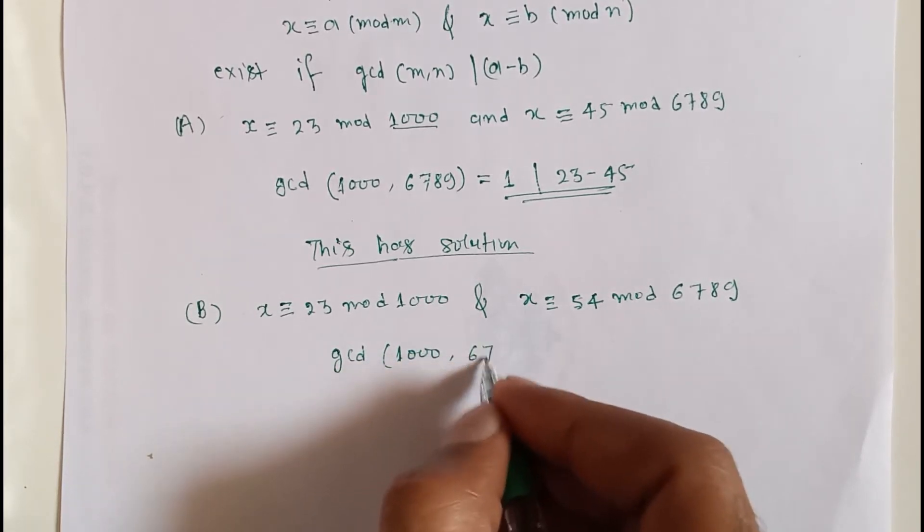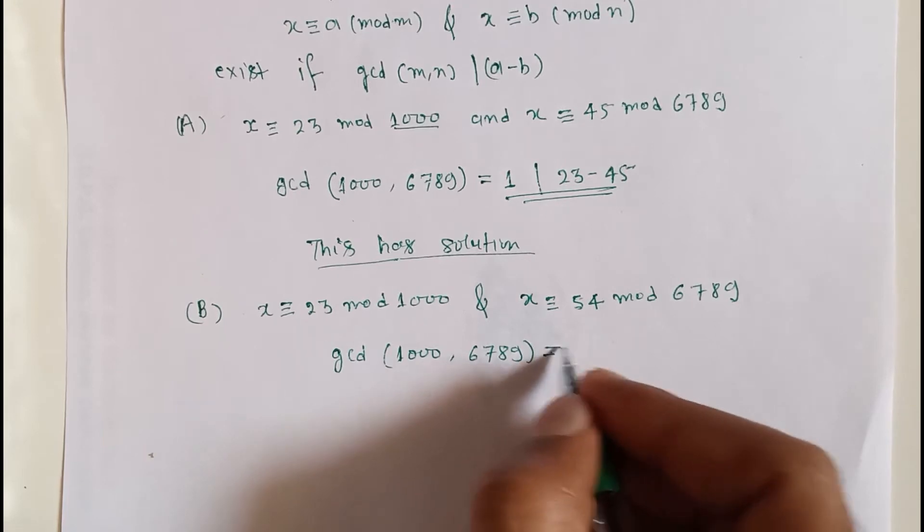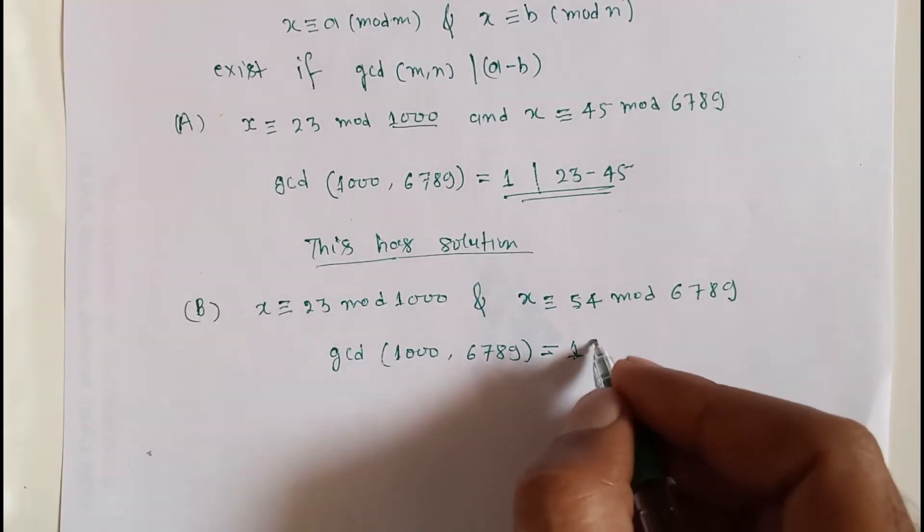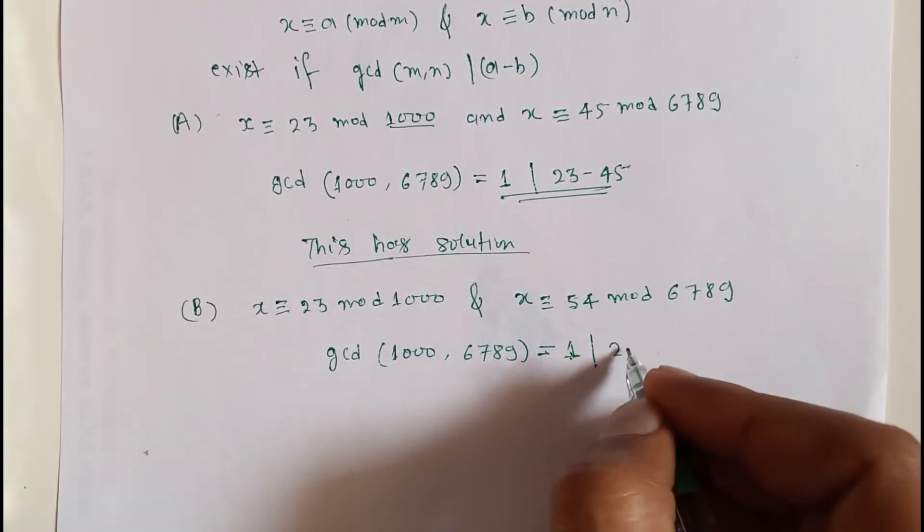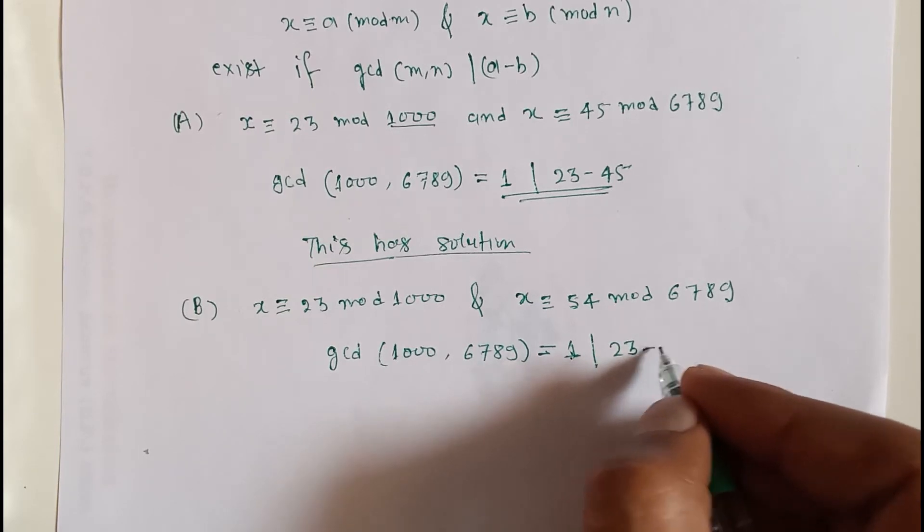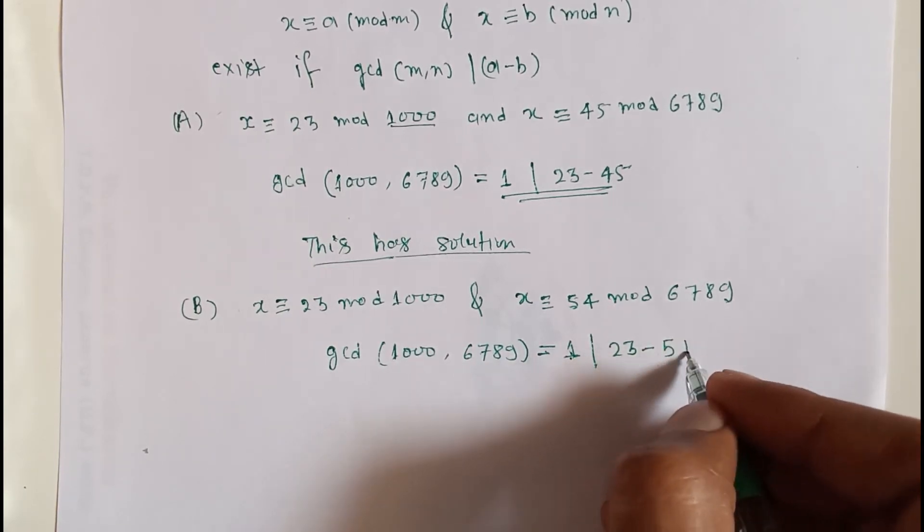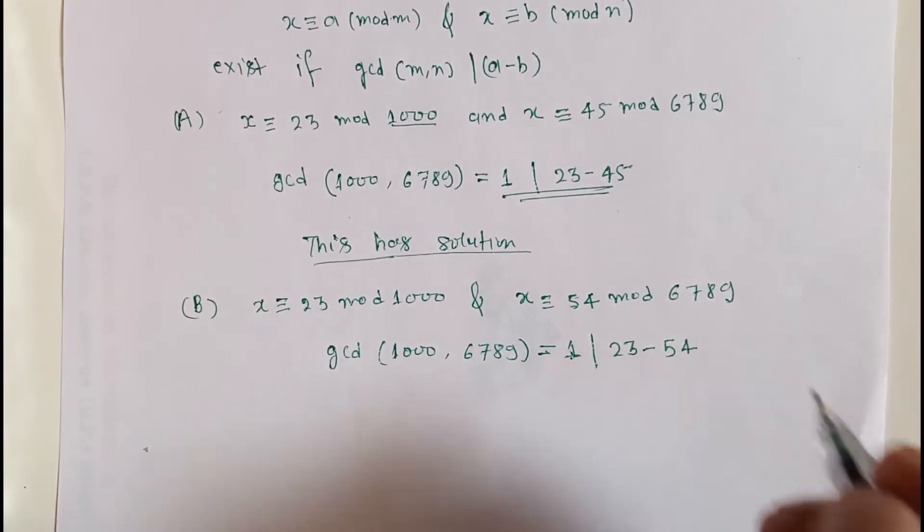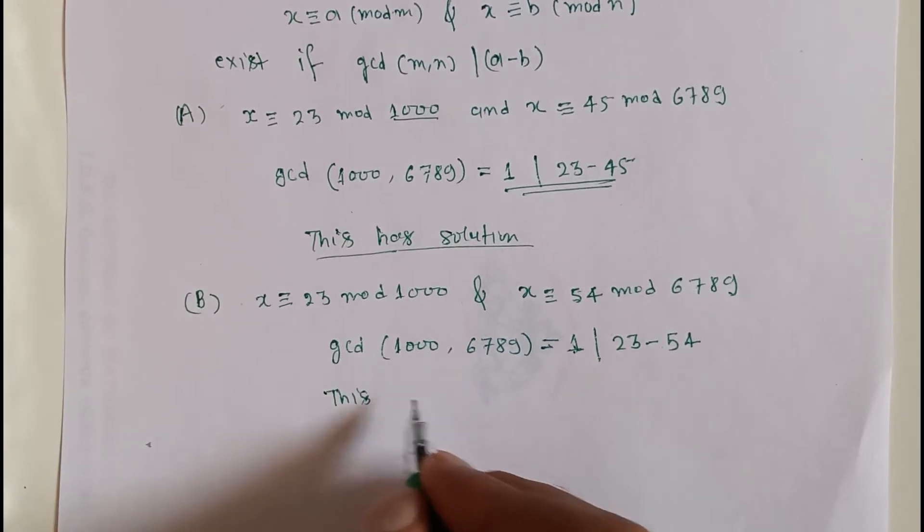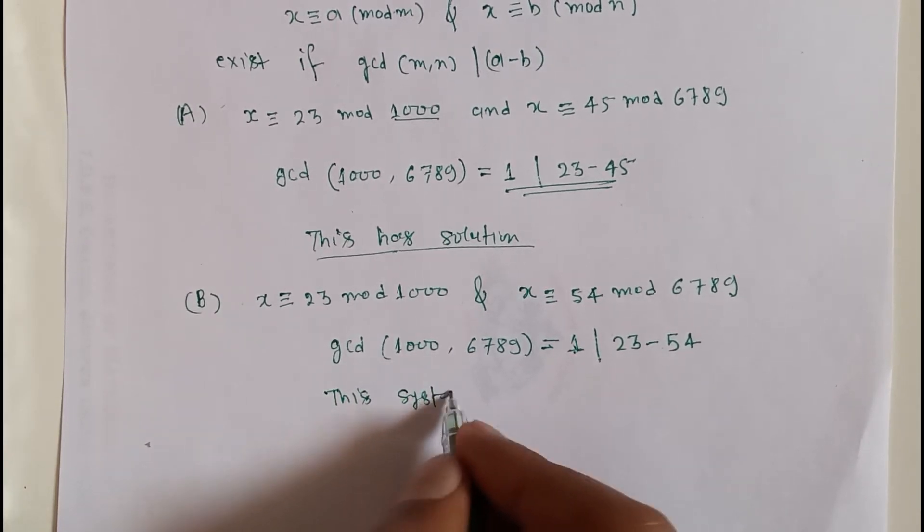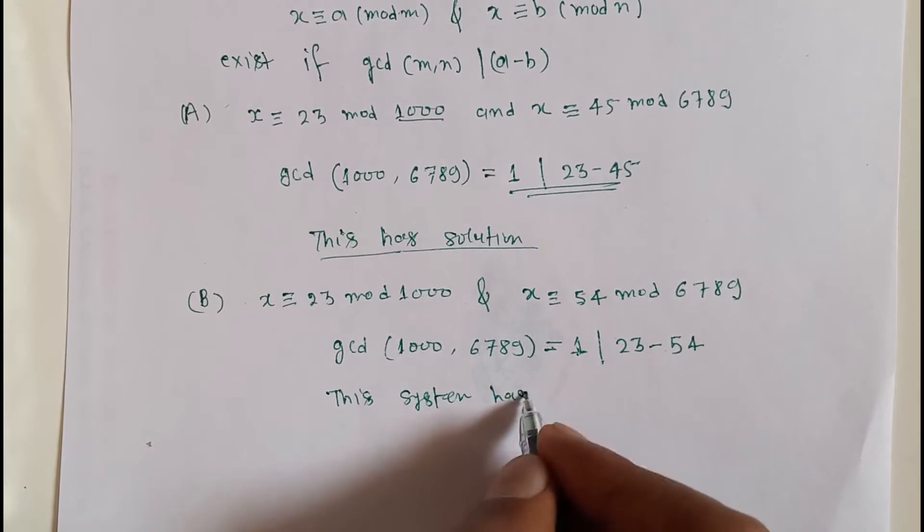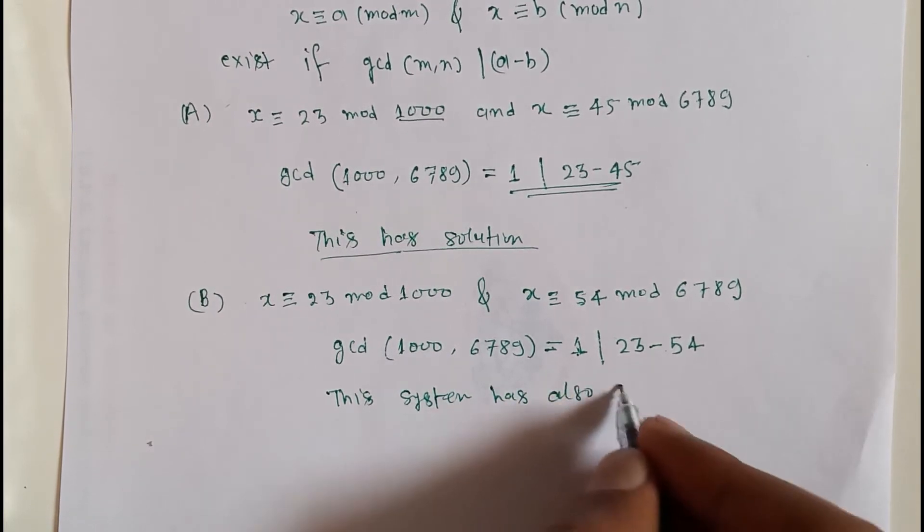This also divides 23 minus 54. So this system has also a solution.